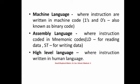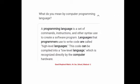In high-level language, instructions are written in human language — mostly we use English to code the instructions. A programming language is a set of commands, instructions, and other syntax used to create a software program. Languages that programmers use to write code are called high-level languages. This code can be compiled into low-level language, which is recognized directly by the computer hardware.